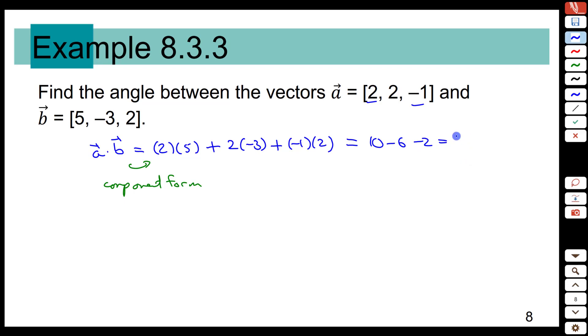Now that 2 value doesn't give us anything immediately, but that is also going to equal, from the angle form, it's going to equal the length of a times the length of b times the cos of the angle between them. And that is now the only unknown left.